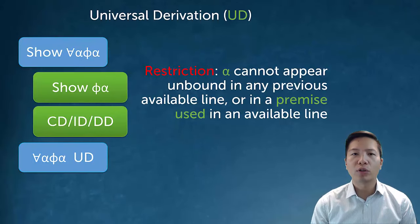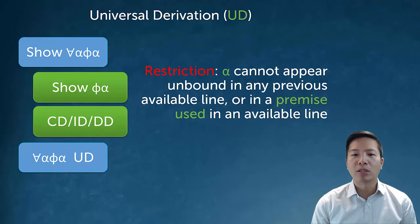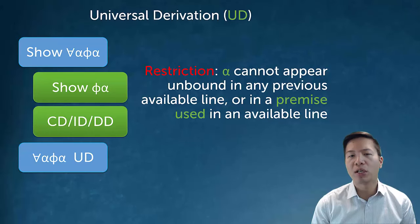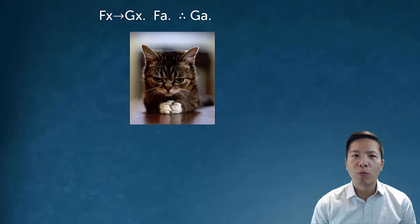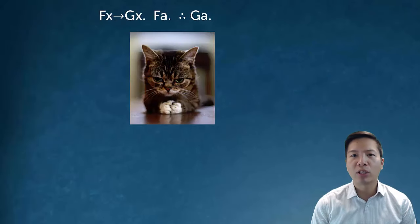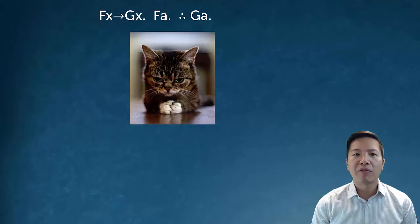So the second restriction to universal derivation is a bit odd. It says that alpha also cannot appear unbound in a premise used in an available line. Now this is so weird. Why does it stipulate that the premise has to be used in an available line? Why can't it just be unused or unbound in any previous premise at all? And this is a weird, annoying aspect of logic where logicians have sort of taken a cue from mathematicians.